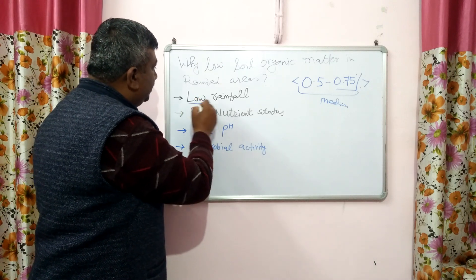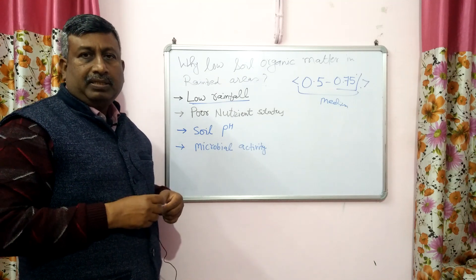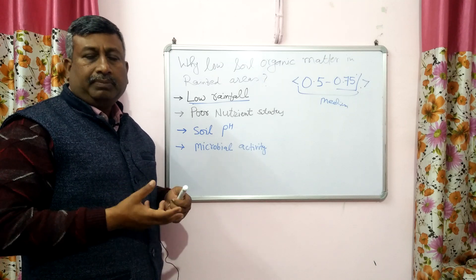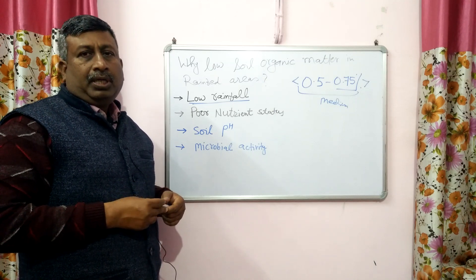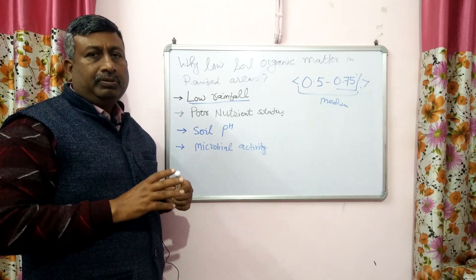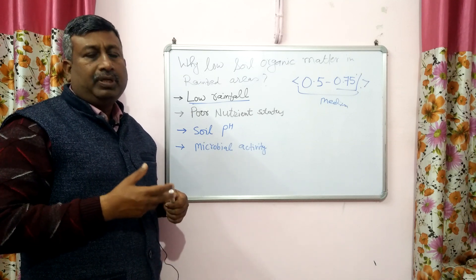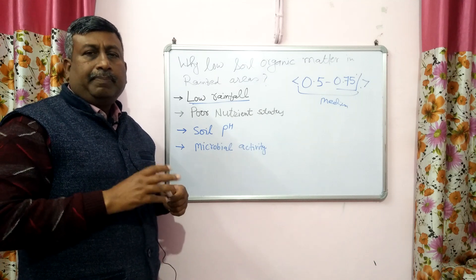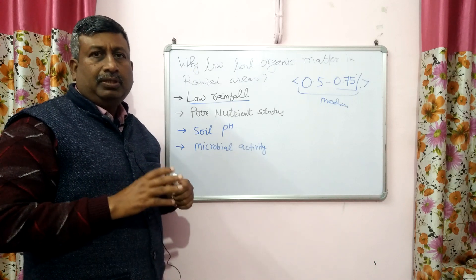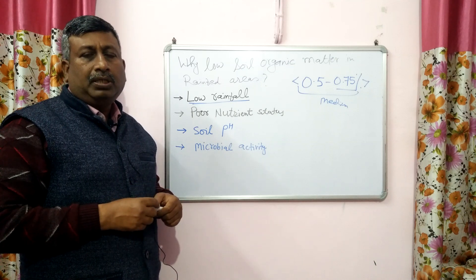The first important reason is low rainfall. In the rain-fed area, rainfall is generally very low — about 700 or 800 mm in some regions, about 300 or 400 mm, and in general less than 1000 mm. In most regions it is in the range of 400 to 600 mm, depending upon the geographical location. For crop production, moisture is essential and without moisture, the crop cannot sustain.